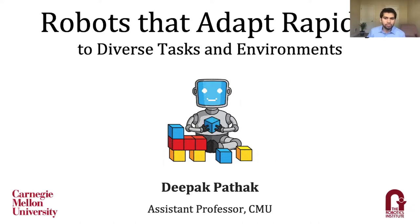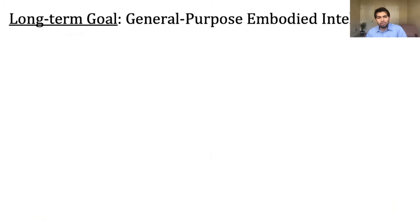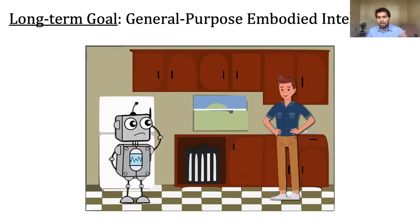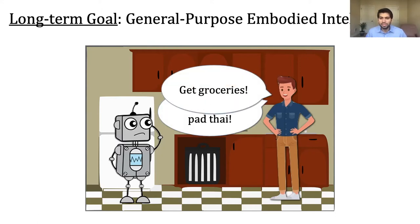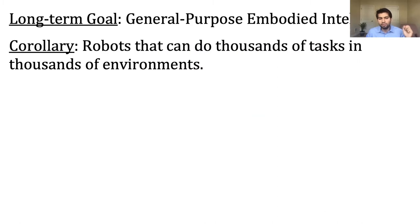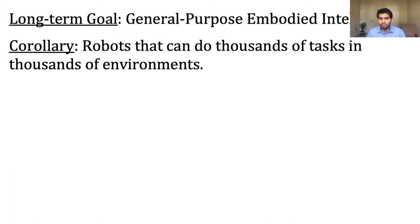What is the long-term goal of robot learning? It is to achieve general purpose embodied intelligence. When a robot is introduced to a new environment, it should be able to achieve all the goals the user gives to it — cooking, shopping, or fixing things. We want robots that can do thousands of tasks in thousands of environments, generalizing to new tasks as well as new environments.